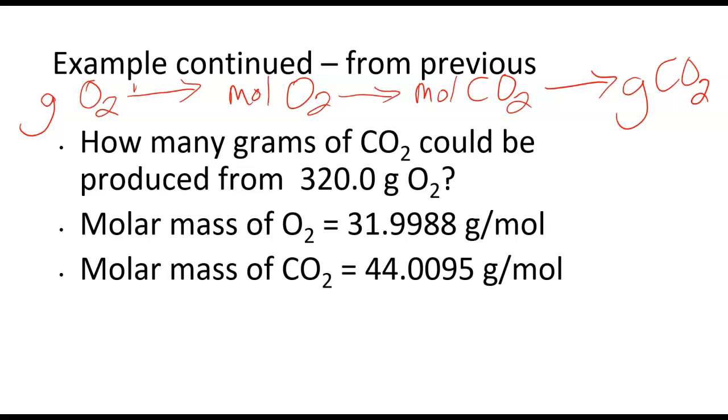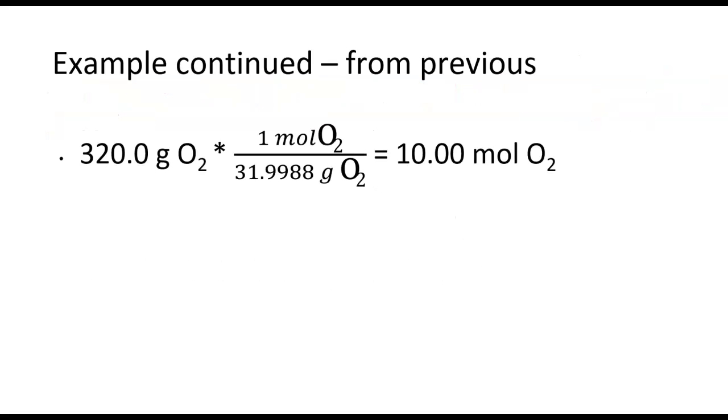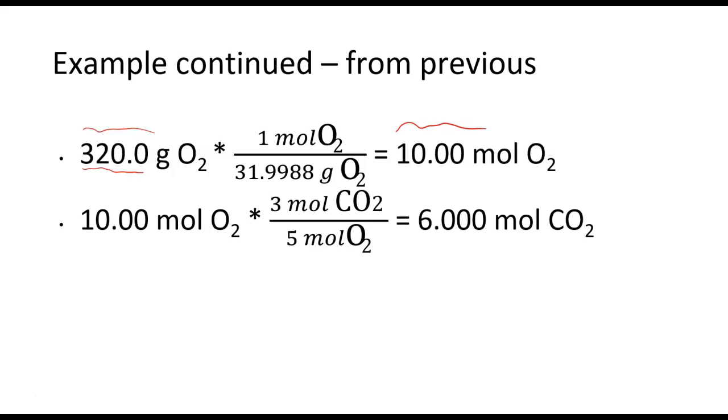We're gonna use our molar mass of O2 in this first step. The middle step, we're gonna use our balanced equation. And the final step, we're gonna use our molar mass of CO2. So I have 320.0 grams of O2. I use the molar mass of O2 to go from grams to moles. So I get 10.00 moles of O2. Do make sure that you keep your significant figures. If we look on the balanced equation, the coefficient for CO2 is three, the coefficient for O2 is five. So we get 6.000 moles of CO2.